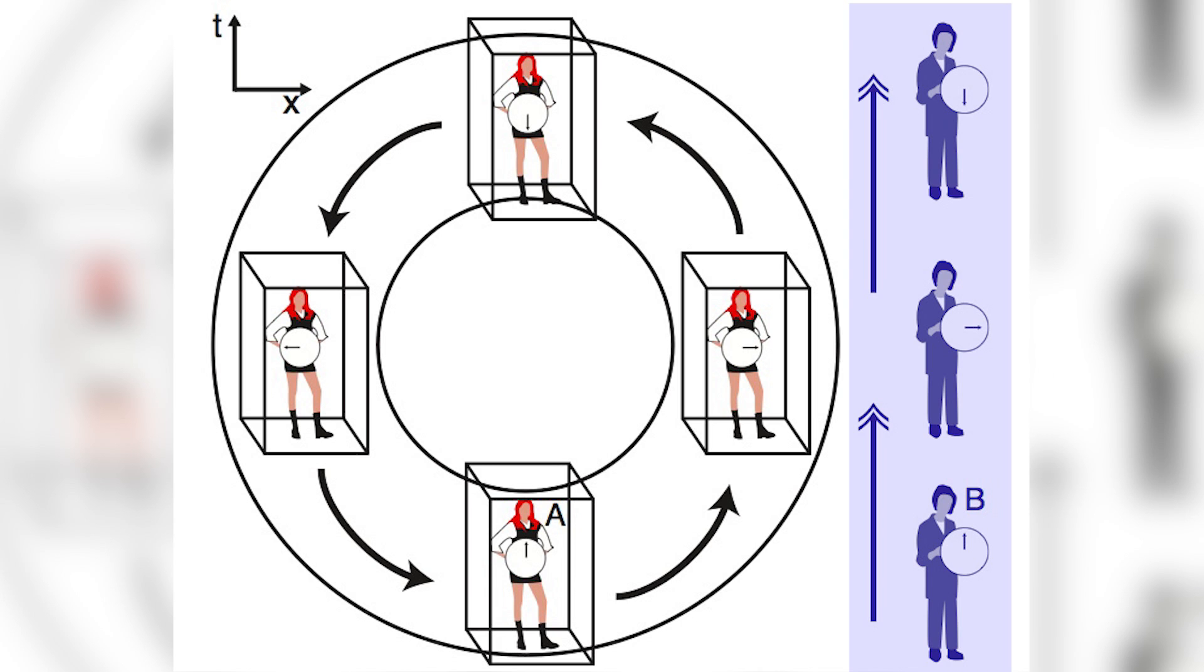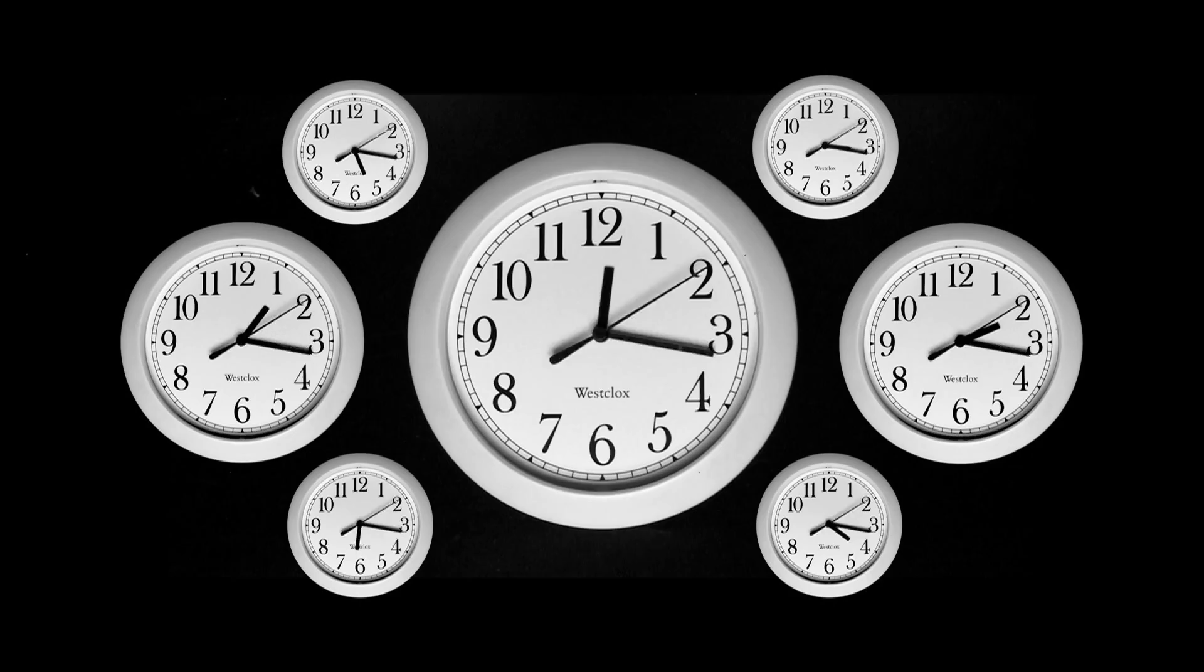Outside the bubble, Observer B will see two versions of A emerge from the same location. One's clock hands will turn clockwise, the other counterclockwise.